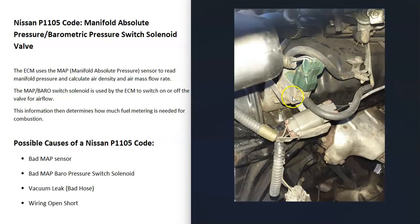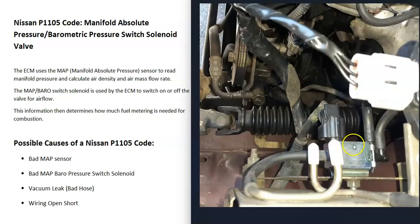The next thing that could cause this is the barometric pressure switch solenoid valve has gone bad and just needs to be replaced. This is a simple valve with vacuum hoses going to it that opens and closes when the computer tells it to. A common way to test it is to apply power to it and listen for a click — if the valve isn't working, there won't be a click.